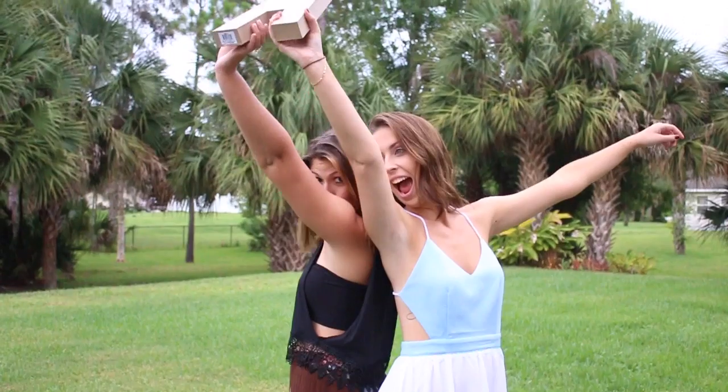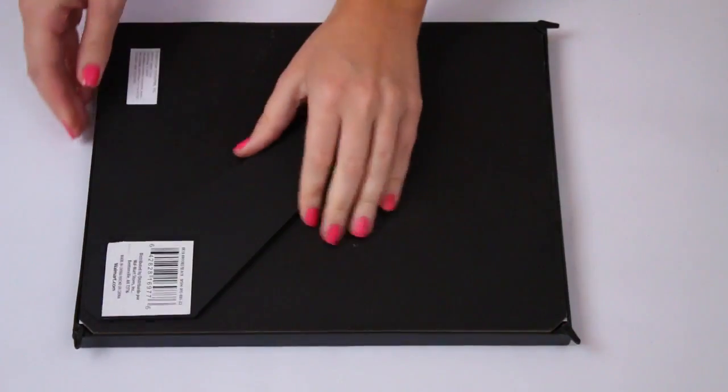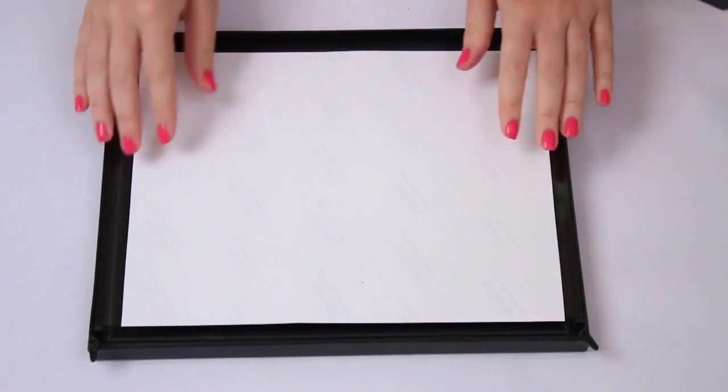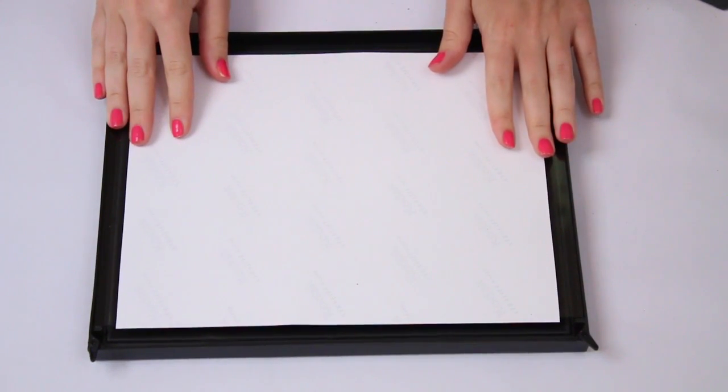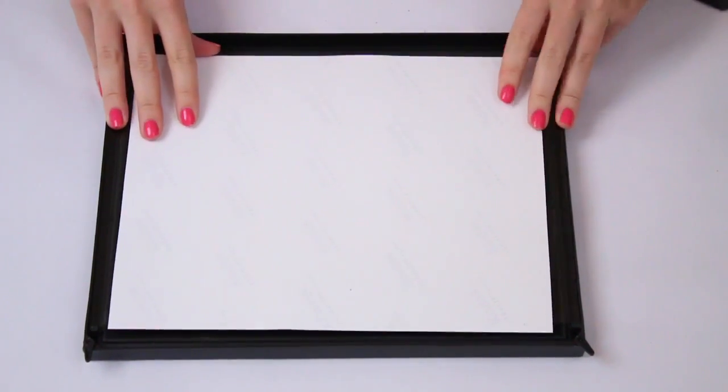So then what you want to do is either print them out and get a triple frame, or what I did is I made a collage on PicMonkey which I use for all my thumbnails and then got an 8x10 frame. I thought this worked better because all my pictures were turned like not the same direction so it was easier just to make a collage and print them out.